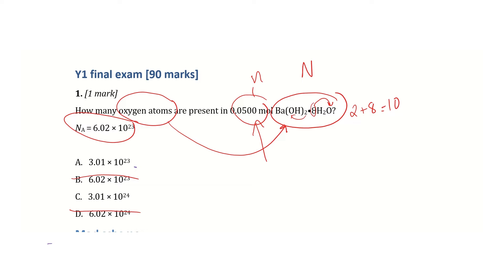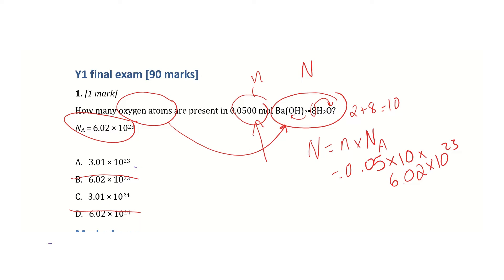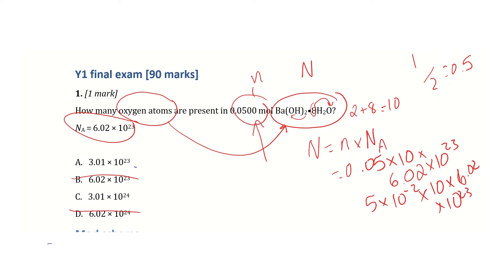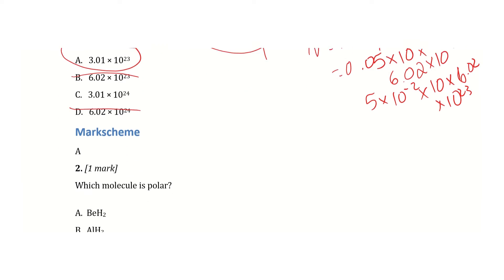I need to find the number of particles, which is the number of oxygen atoms, given the number of moles. The formula is N = n × Avogadro's number. So I have 0.05 moles times 10 oxygen atoms times 6.02 × 10²³. This rearranges to 5 × 10⁻² × 10 × 6.02 × 10²³. You can clearly see that dividing 6.02 by 2 gives 3.01, and accounting for the powers gives 3.01 × 10²³. The correct answer is A.